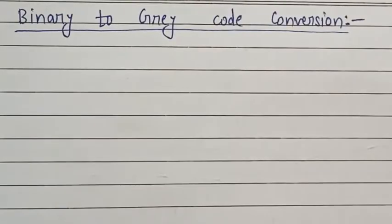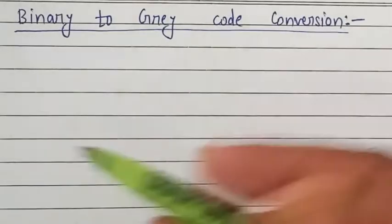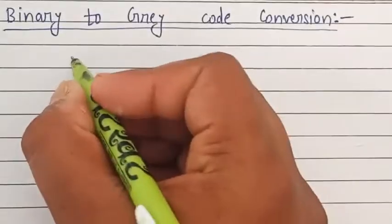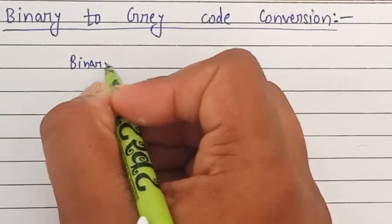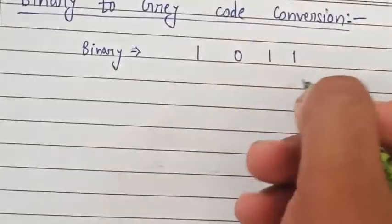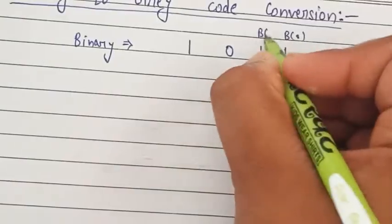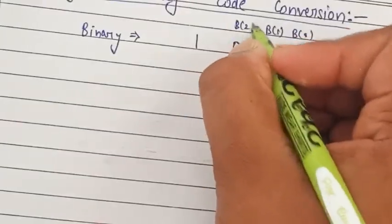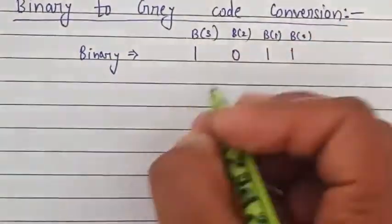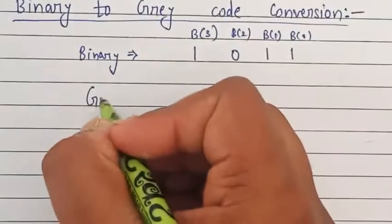Welcome back to my channel. Today's topic is binary to gray code conversion. Let's take an example and understand how to convert binary to gray. The binary value is 1011 — this one is b0, this one b1, this one b2, and finally this one is b3. We have to convert these bits into gray code.